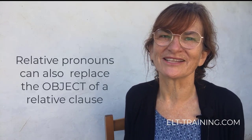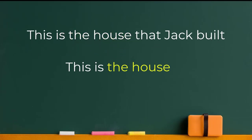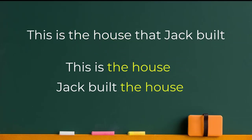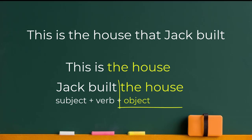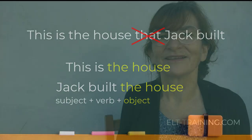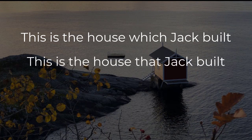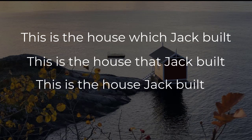And just to make things a bit more complicated, relative pronouns can take the place of an object in a clause too: 'This is the house that Jack built.' Here the relative pronoun replaces the object, 'house', not the subject, 'Jack'. In this case, we can just miss out the relative pronoun altogether: 'This is the house Jack built.' So there are different options — 'This is the house which Jack built', 'This is the house that Jack built', or just 'This is the house Jack built.'